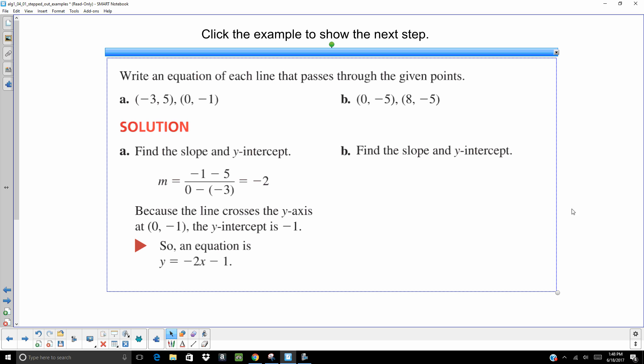You do the same thing over here. Find the slope, the difference of your x's, or the difference of your y's over the difference of your x's. So, 5 minus negative 5 all over 8 minus 0. And you notice you get 0. So, I'm automatically thinking it's a horizontal line. And our y-intercept is negative 5, because they're giving us the intercept right here. So, y equals negative 5.